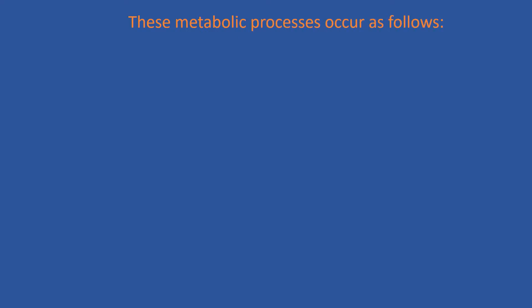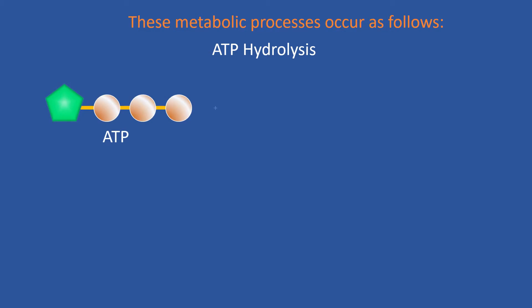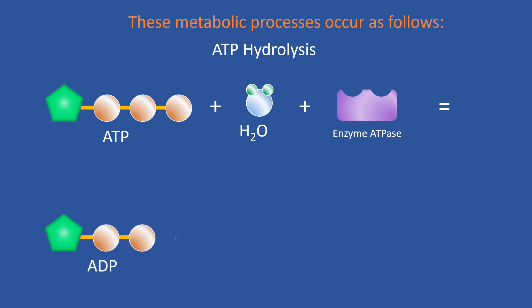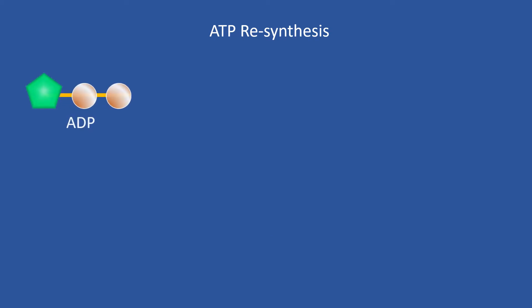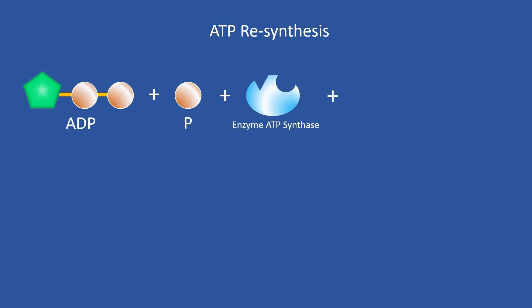Essentially, these metabolic processes occur as follows. ATP Hydrolysis: ATP plus water, and the action of the enzyme ATPase, equals ADP plus phosphate plus free energy that is used to perform cellular work. ATP Resynthesis: ADP plus phosphate plus the action of the enzyme ATP synthase, plus the energy extracted from food, is used to reform ATP.